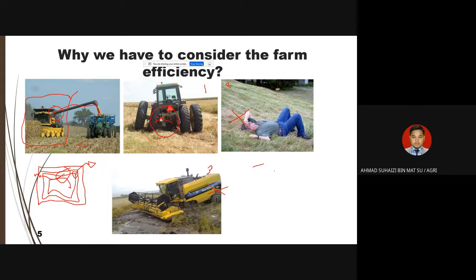The second situation involves the operator. Whether the operator is skilled, unskilled, or still learning a new machine, there are constraints from the operator side. This actually interferes with field productivity — or what we call field effectiveness.